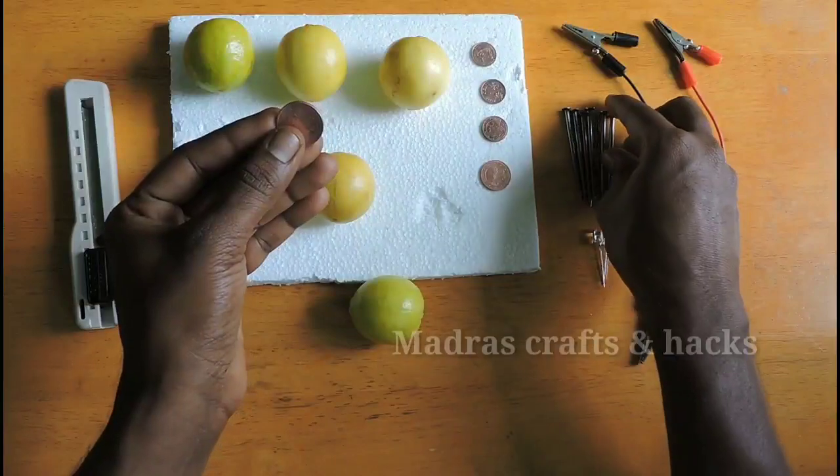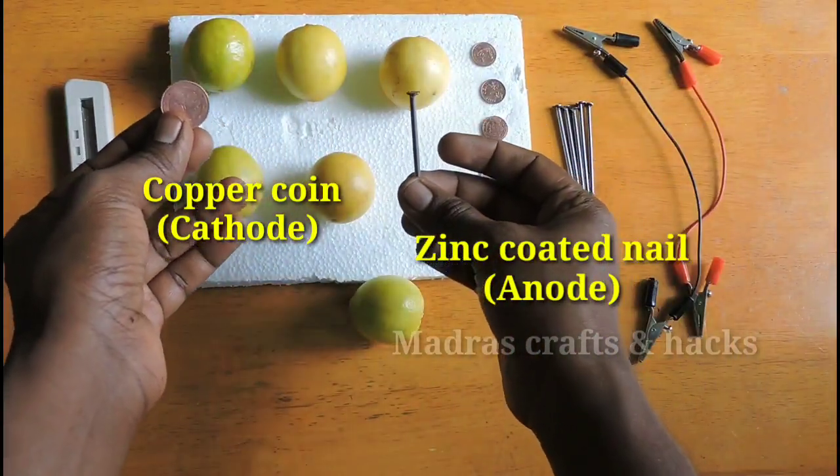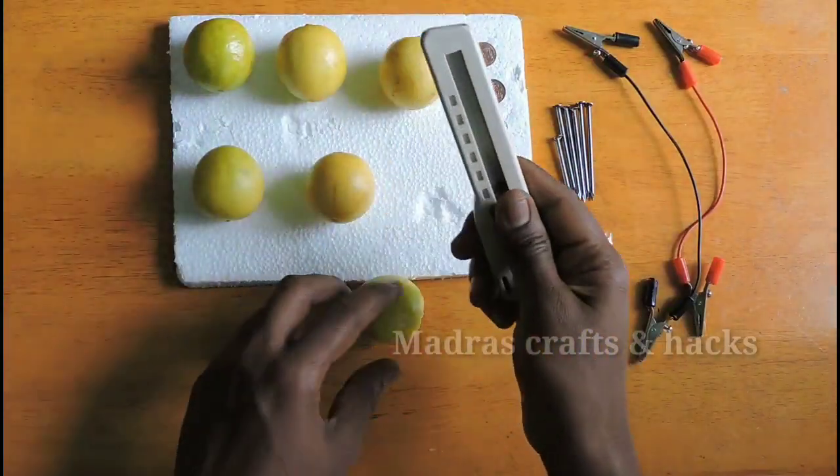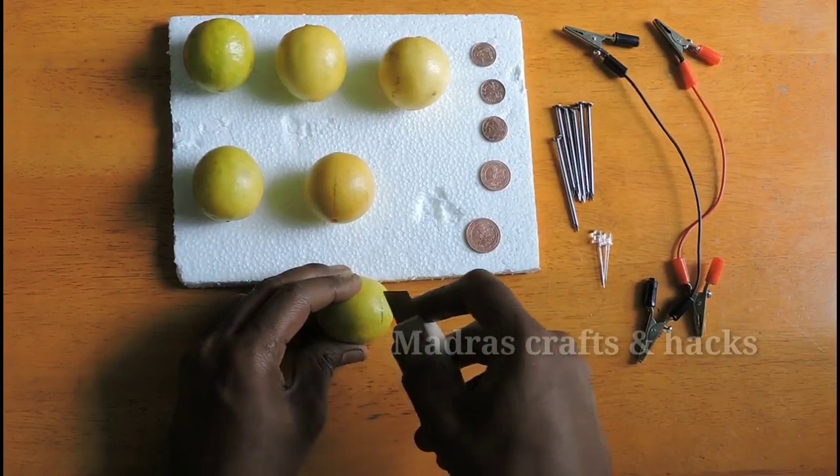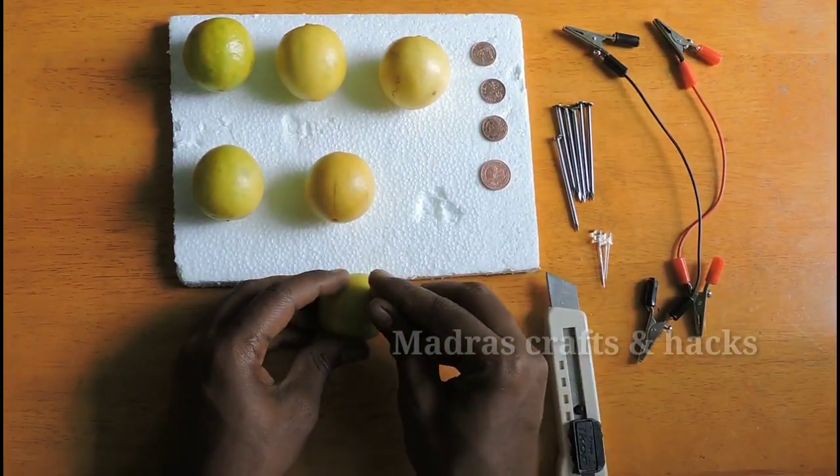Next, we need two electrodes. I am going to use copper coin as cathode and zinc coated nail as anode in this experiment. Next, we will insert the copper coin and zinc coated nail inside the lemon.